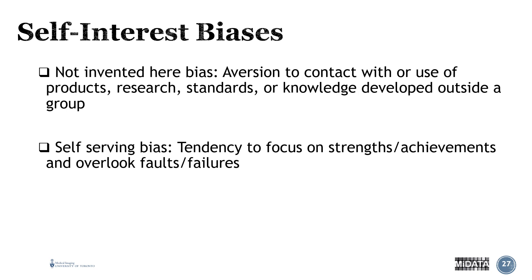The not invented here bias is the aversion to using products or research knowledge developed outside of your group. In research, you want to move the state of the art forward, so you should systematically look everywhere for what is needed to do your research best. The self-serving bias is the tendency to focus on strengths and achievements and overlook faults and failures. You tend to learn a lot more from looking at your failures than from your achievements.